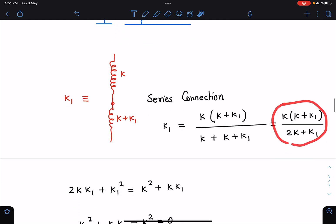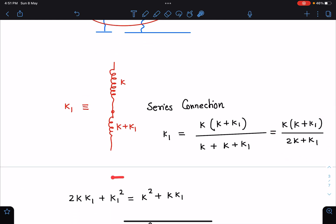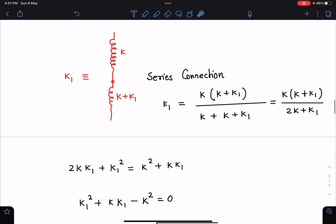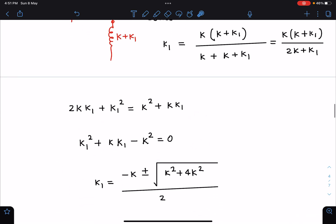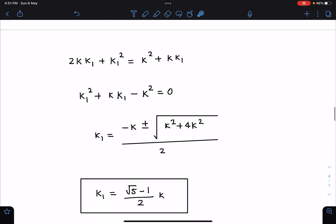after writing in this form I am getting this quadratic equation which is 2k·k1 + k1² = k² + k·k1. If I rearrange these terms, it is a quadratic equation in k1, so it will have two roots. Since k equivalent cannot be negative, I am going ahead with this positive value. Using -b ± √(b² - 4ac) / 2a, I am getting k1 as (√5 - 1)/2 times k.